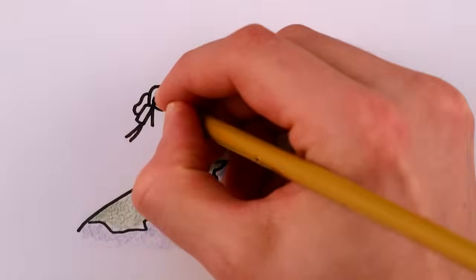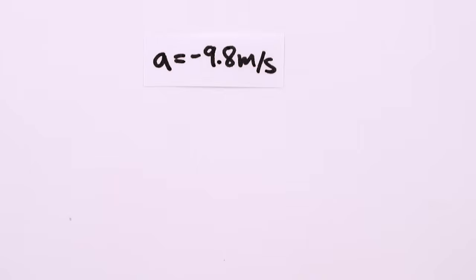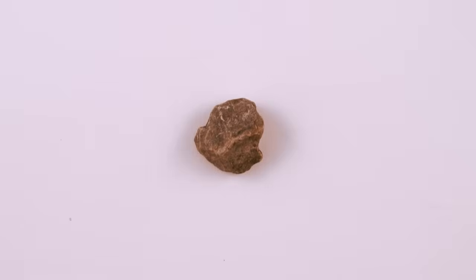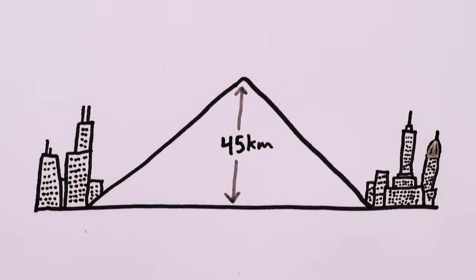On Earth, you would need a space suit to survive at that altitude, but could there even be a mountain that tall here on our home planet? Based on the strength of Earth's gravity and the density and strength of rock, in principle you could make a single conical mountain that stretched between New York and Chicago and soared over 45 kilometers.